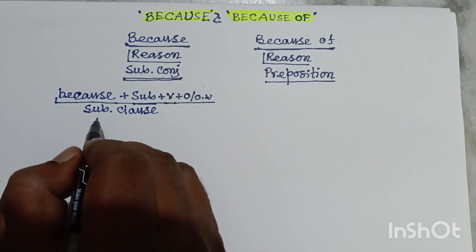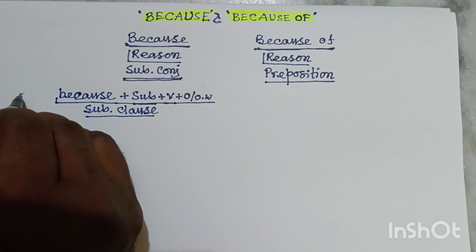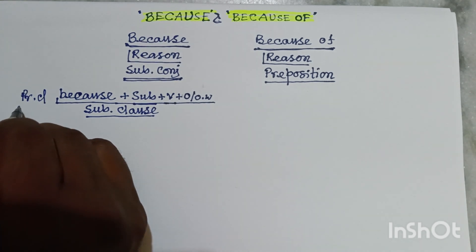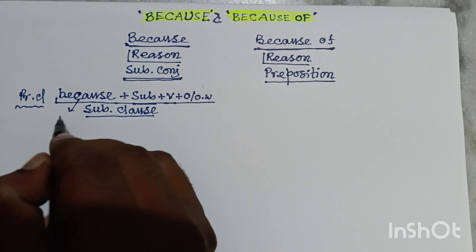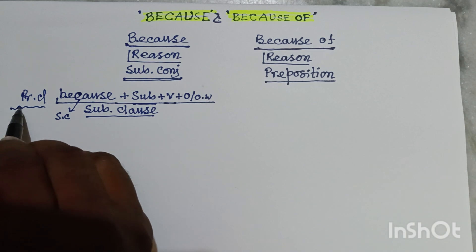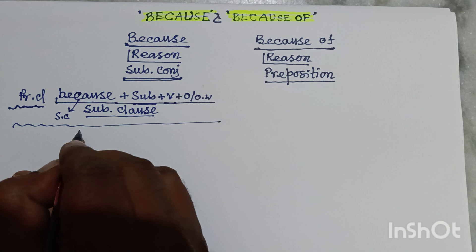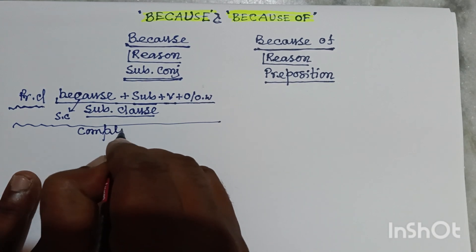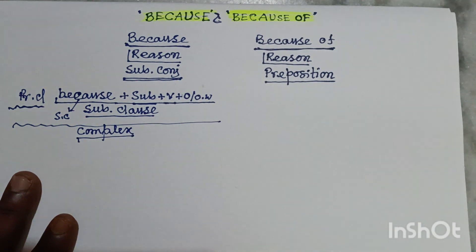As it is a subordinating clause, obviously with it we have to use one principal clause — at least one principal clause. So 'because' will act as a subordinating conjunction, and the other part will be the principal clause. The entire sentence will therefore be a complex sentence. My dear friends, I think you can understand the structure.